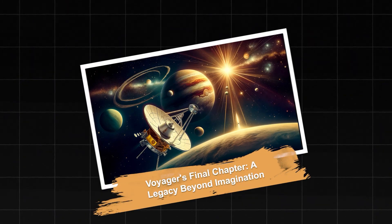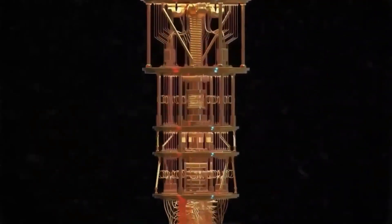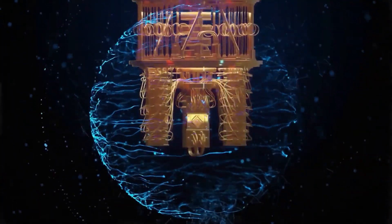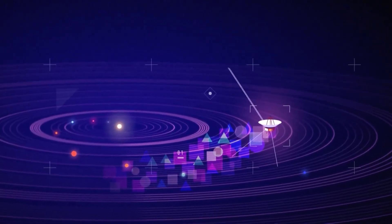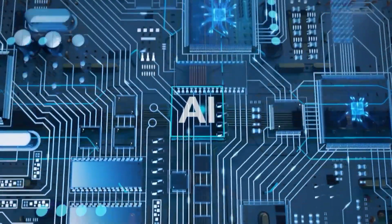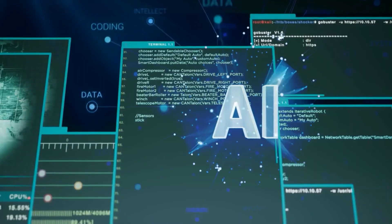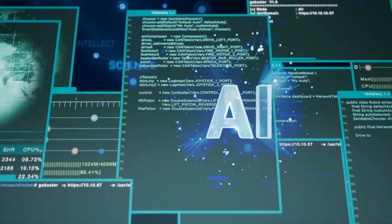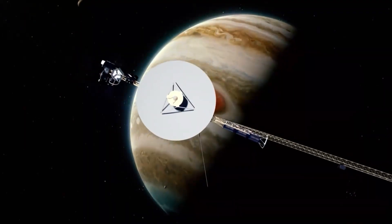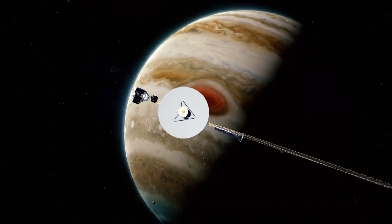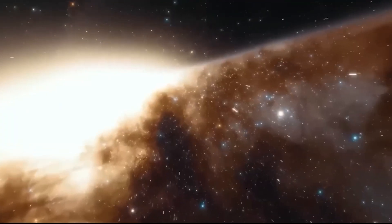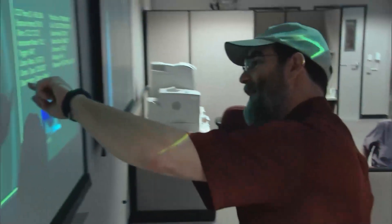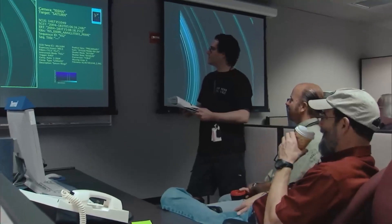Voyager's final chapter: A legacy beyond imagination. As Voyager 1's power systems continue their inevitable decline, with final shutdown projected around 2025 to 2030, each new transmission becomes increasingly precious. The spacecraft that revolutionized our understanding of the outer planets may now be delivering its most profound discovery in its final years. Mission engineers are implementing creative power-sharing strategies to keep key instruments operational as long as possible, prioritizing those most likely to gather data about the anomaly.